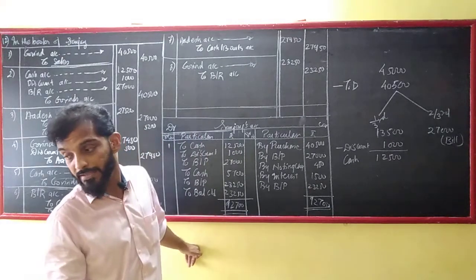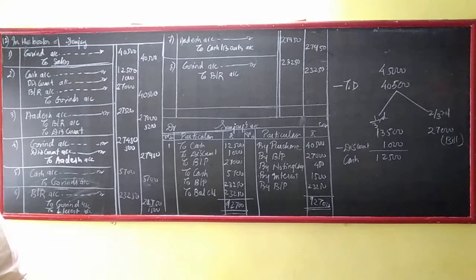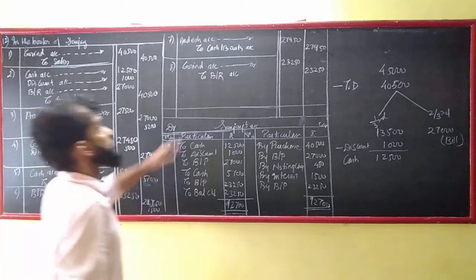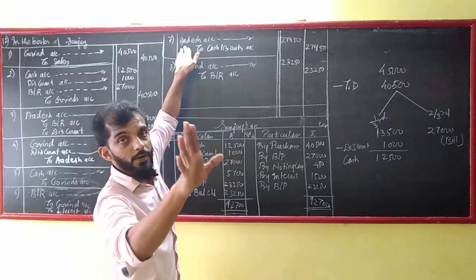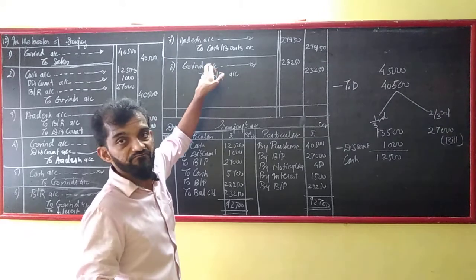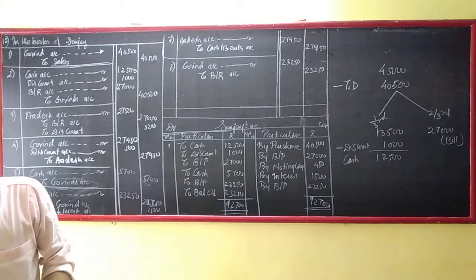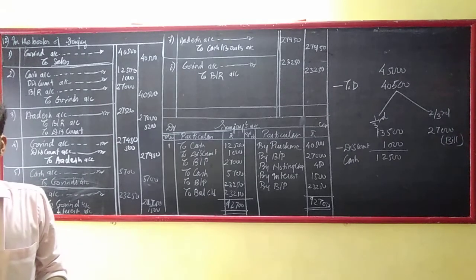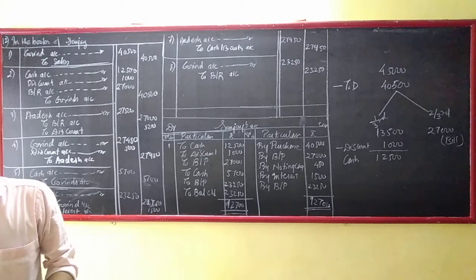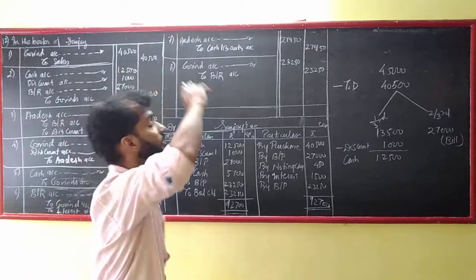On the due date of the new bill, Govind dishonored the bill again. So we have to reverse it. They said Sanjay paid Adesh the balance due to him. Adesh account how much? 27,950. So Adesh account debit to cash or bank 27,950.